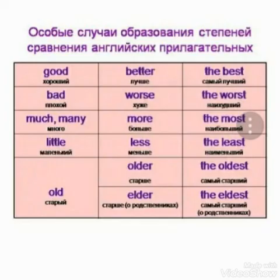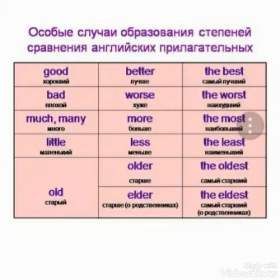Особый случай образования степеней сравнения английских прилагательных. Good – хороший, better – лучший, the best – самый лучший. Bad – плохой, worse – хуже, the worst – наихудший.